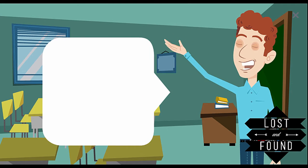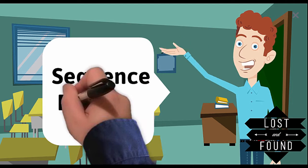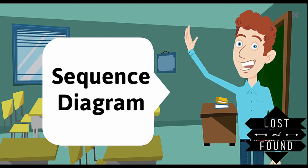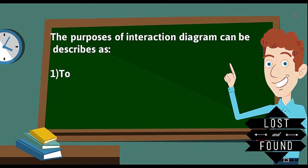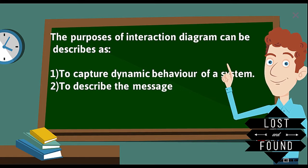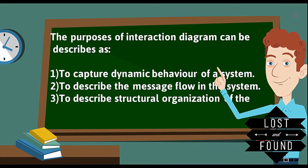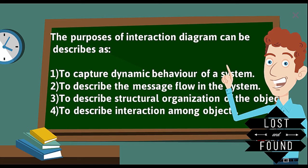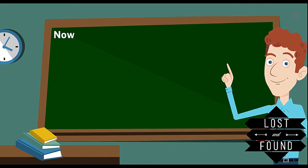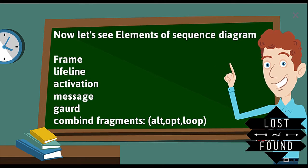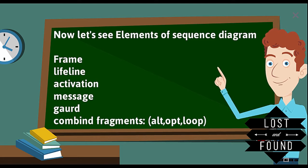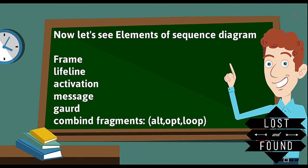After the activity diagram, the next is the sequence diagram. A sequence diagram falls under the interaction diagram category. The purposes of interaction diagrams are: to capture dynamic behavior of a system, to describe message flow in the system, to describe structural organization of objects, and to describe interaction among objects. The elements of a sequence diagram include: frame, lifeline, activation, message, guard, and combined fragments like alt, option, and loop.